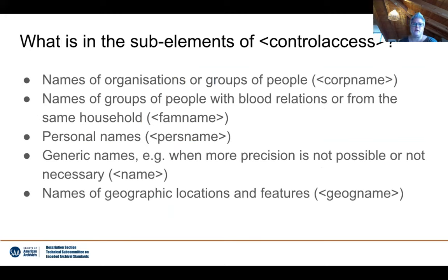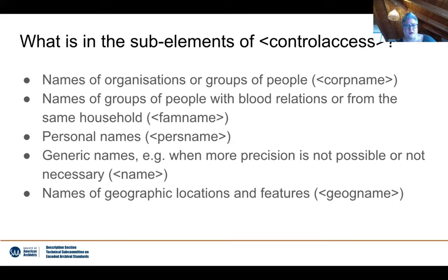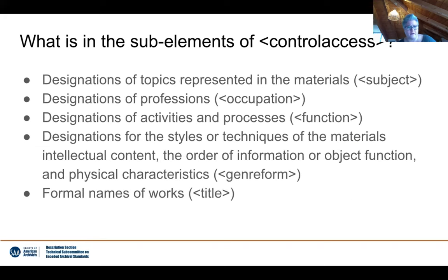In all those sub-elements of control access you will find names or titles of the things being described: names of organizations or groups of people, groups of people with legal relations or from the same household, personal names, and generic names — for example when there's no more precision possible, or where it isn't required to be that specific. Also names of geographical features, designations of topics represented in the materials, professions, activities and processes, styles or techniques of the materials, intellectual content, order of information or object function and physical characteristics, and formal names of works.